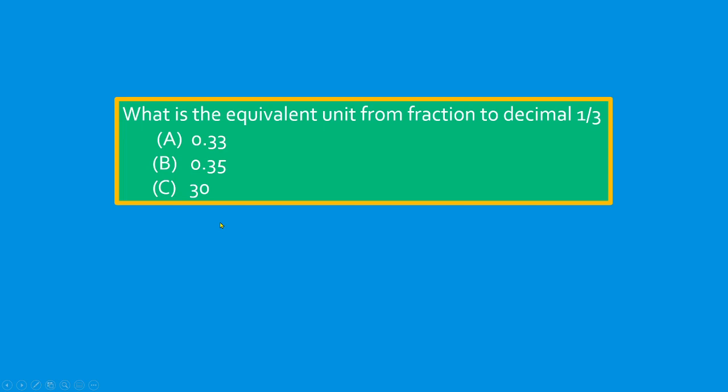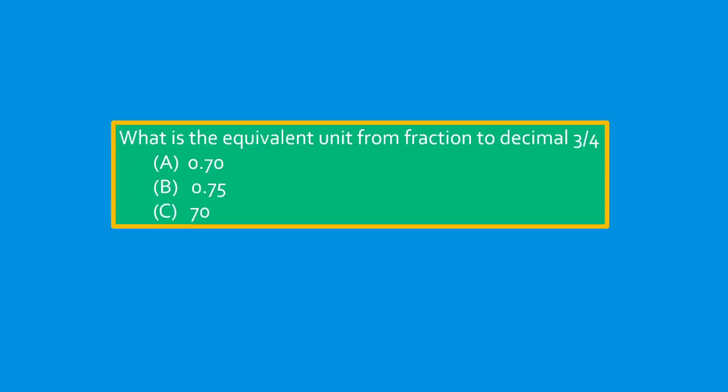Example. What is the equivalent unit from fraction to decimal? 1/3. Answer: A, 0.33. B, 0.35. C, 0.30. The answer is 0.33, A is the answer.